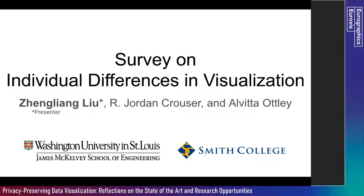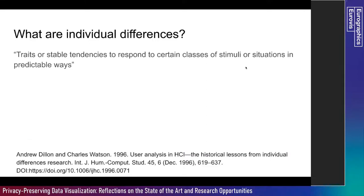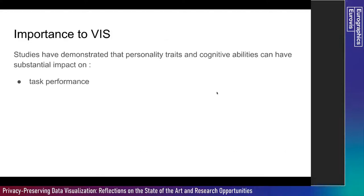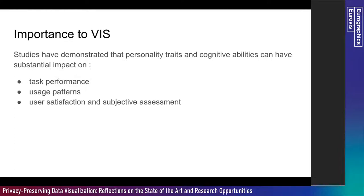This survey investigates research related to personalities and cognitive abilities and their influences on data visualization use. Individual differences are defined as traits or stable tendencies to respond to certain classes of situations in predictable ways — essentially classified as either personality traits or cognitive abilities. Studies have demonstrated that personality traits and cognitive abilities can have a significant impact on task performance, usage patterns, user satisfaction, and subjective assessment — all of which are important factors to data visualization.